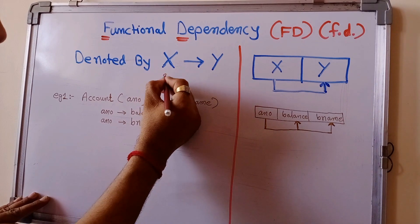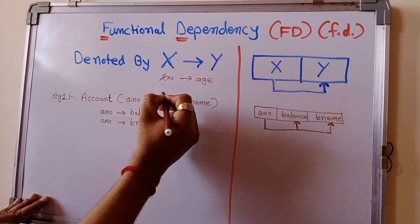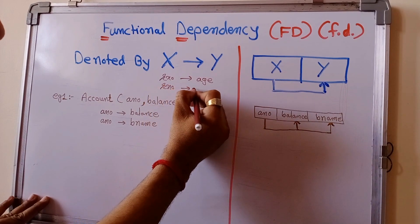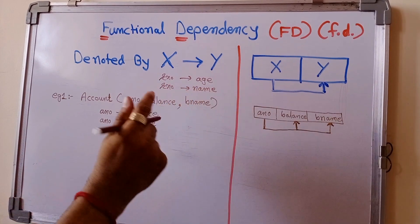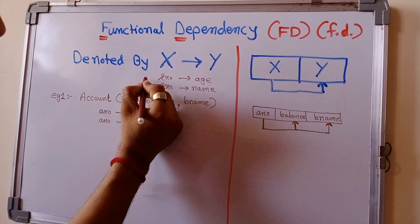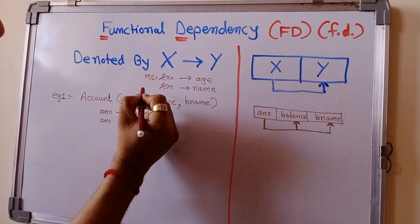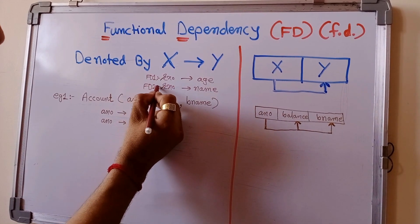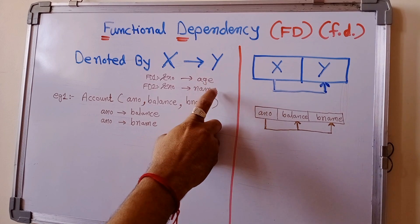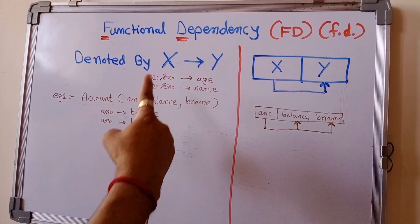So role number determines age, and role number determines name. These are two functional dependencies: FD1 and FD2. Here, age and name are the dependents and role number is the determinant. X is the determinant and Y is the dependent.